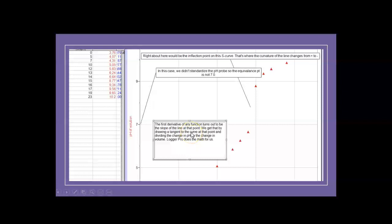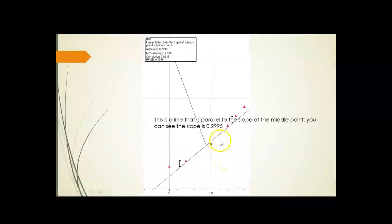It should be the slope of the line at that point. We get that by drawing a tangent to any curve at that point, and then we just do rise over run, the change in pH by the change in volume. LoggerPro nicely does that math for us. Here is, for instance, a point on the line. This is not the equivalence point. We have this point on the line right in the middle of these two. And if we were to do a best fit straight line on these three points, we get a slope that is very close to the slope at this point on the curve, and that's 0.2995. Here you can read it right off the LoggerPro output. You have the same kind of thing available to you on the graphical analysis.